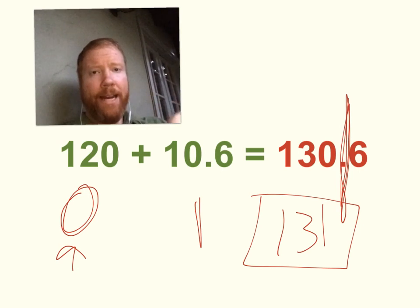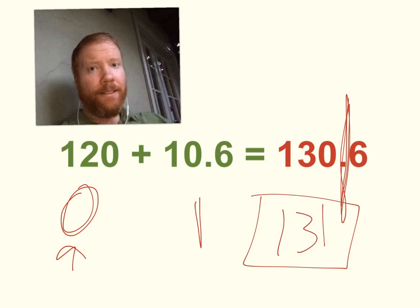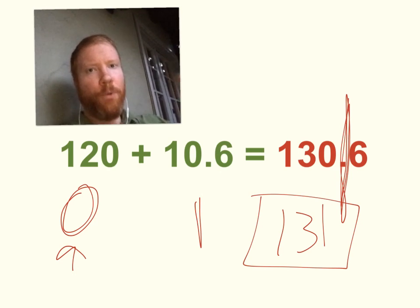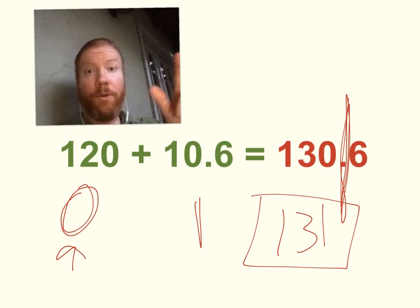So again, when you're adding or subtracting, your answer can only have as many decimal places as the input with the fewest decimal places. That's why we dropped off the 0.6. Let's do another one.